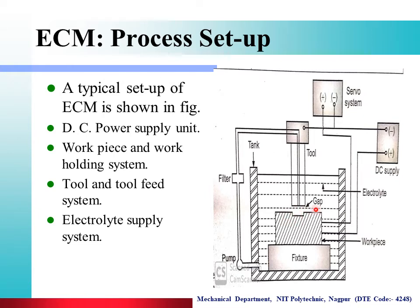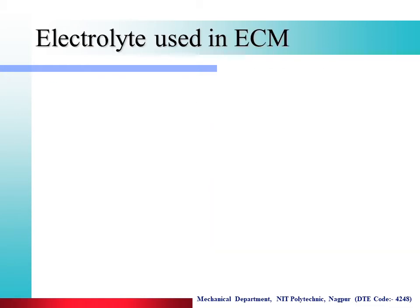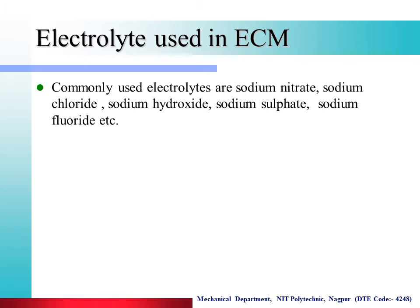The same shape can be produced on a workpiece. Electrolytes used in the Electrochemical Machining process — commonly used electrolytes are sodium nitrate, sodium chloride, sodium hydroxide, sodium sulphate, and sodium fluoride.